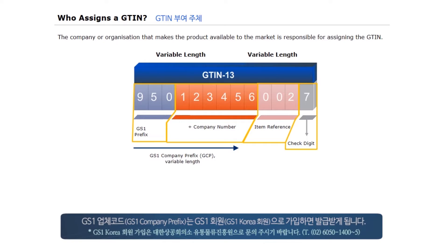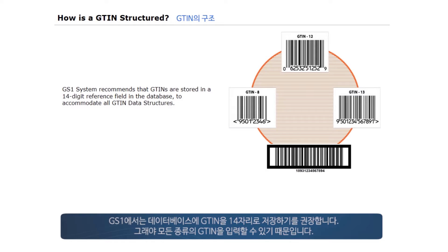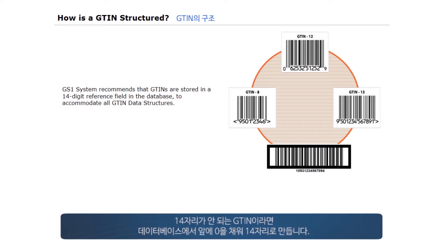An organization is given a GS1 company prefix upon joining a GS1 member organization. In the GS1 system, it is recommended that GTINs are stored in a 14-digit reference field in the database to accommodate all GTIN data structures. If a GTIN contains less than 14 digits, the database adds leading zeros in front of the GTIN to fill the 14-digit field.